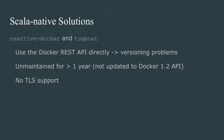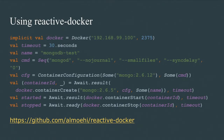We found two projects that looked promising: Reactive Docker and Tugboat. But at the time we were looking, they hadn't been maintained for more than a year, and they used the Docker REST API directly without TLS support, meaning they didn't support the latest versions of Docker. Looking at the sample code for Reactive Docker, it's much more like the way we want to write code — case classes, futures — a good end goal, but it wasn't suitable for what we needed right then and had some very specific use case limitations for running integration tests.